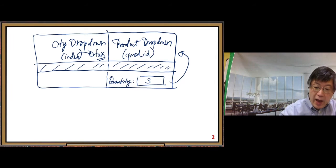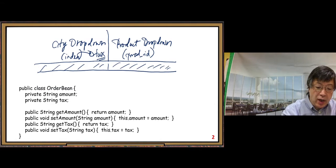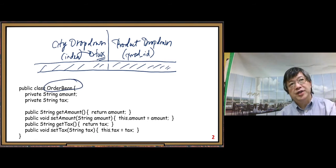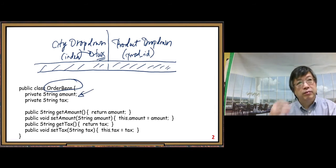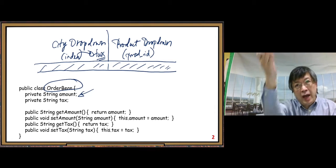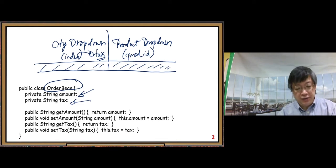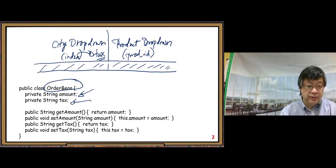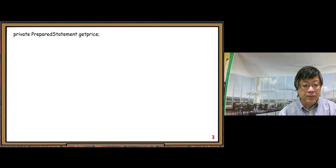To display the result we need a Java bean — we call it the order bean. The result contains two parts: the total amount paid before tax, and the tax part. So it is very simple.